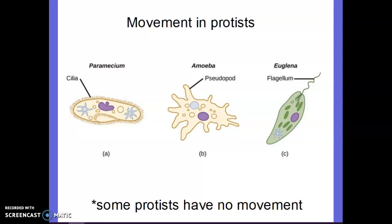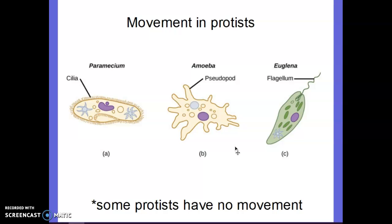There are four modes of movement for protists. One is none — most parasitic protists have no movement. Another is by cilia — little hair-like structures around the outside, like tiny nose hairs, that help them move. The euglena moves by a flagellum, which is a tail it can swim with. And amoebas move by something called a pseudopod, which means 'fake foot' — they extend it out to move around. They also eat with these structures: cilia sweep food into their mouth, pseudopods grab food. The euglena doesn't need to eat that way because it has chloroplasts and does photosynthesis.